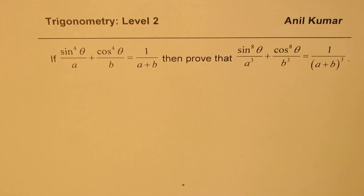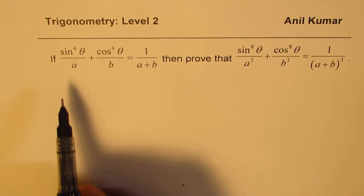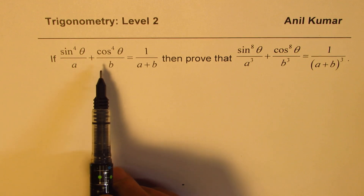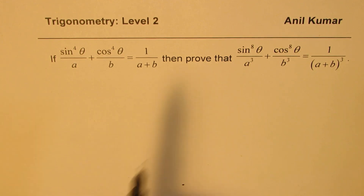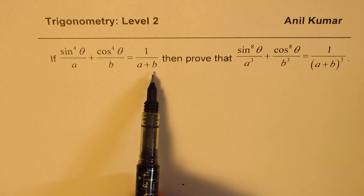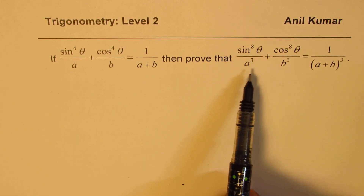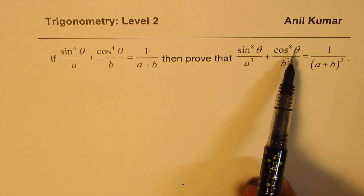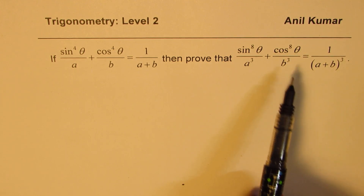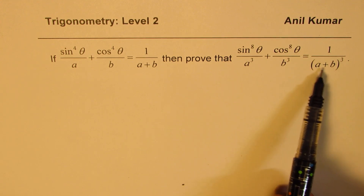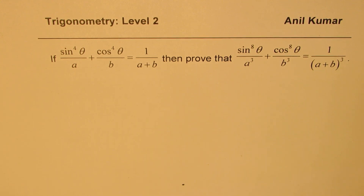I am Anil Kumar. Welcome to my series on trigonometry. Here is a level 2 question for you. If sine to the power of 4 theta over a plus cos to the power of 4 theta over b is equal to 1 over a plus b, then prove that sine to the power of 8 theta over a cubed plus cos to the power of 8 theta over b cubed is equal to 1 over (a plus b) whole cube. You can always pause the video and then look into my suggestions.